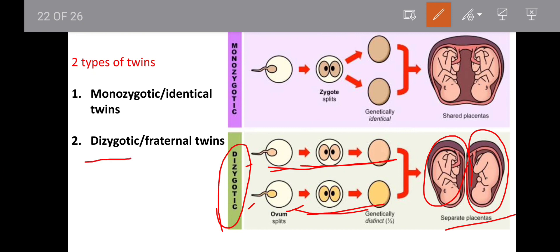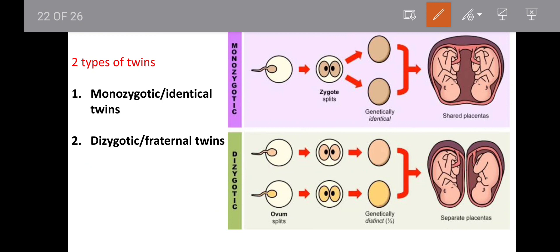Di means two zygotes. So in dizygotic twins, there is a first zygote and a second zygote. These two different zygotes develop separately, and they share separate placentas. They are dizygotic or fraternal twins.